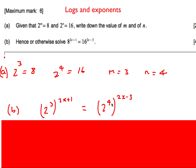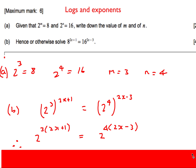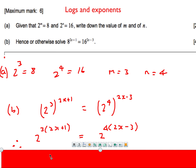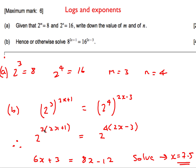Using the laws of indices, multiply the powers inside the brackets: (2³)^(2x+1) = (2⁴)^(2x−3) gives 2^(6x+3) = 2^(8x−12). Since the bases are both 2, the exponents must be equal: 6x + 3 = 8x − 12. Solving gives x = 7.5.